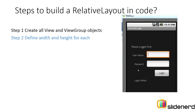Second step: define the width and height for each of them. For the relative layout, if you guys remember, this is going to take the entire screen up — so relative layout is match parent in width and match parent in height. And these controls probably take wrap content in width and wrap content in height.